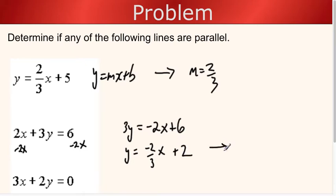So this line has a slope of negative two-thirds, which is not the same as two-thirds. Notice this line slopes up because it's positive. This line is sloping down because it's negative. So these two are not parallel.